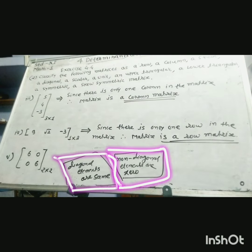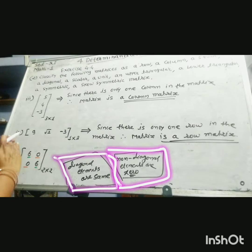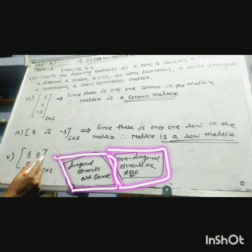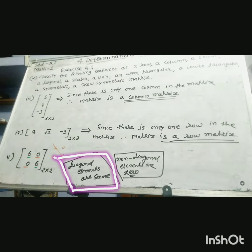This matrix is called a scalar matrix when the diagonal elements are the same and all non-diagonal elements are 0. A scalar matrix is always a square matrix because the number of rows and columns are the same.